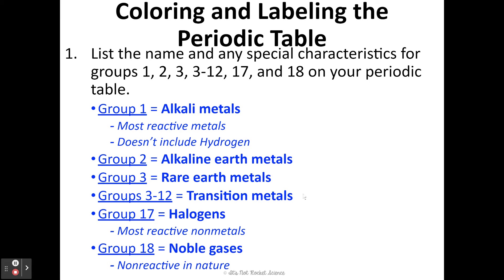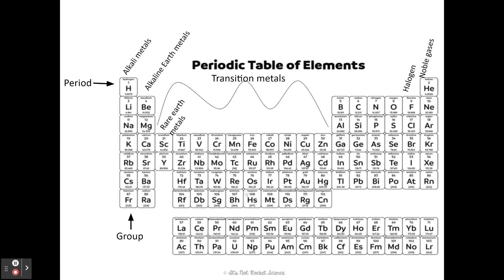When you go to label your periodic table, it will look like this: alkali metals labeled here for number one, alkaline earth metals labeled here for group two, rare earth metals here for group three, and then transition metals stretches from group three all the way over to group twelve. Then we pick back up at our halogen group and then noble gases. If you need to pause, go ahead and make sure your periodic table looks exactly like mine.